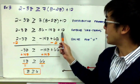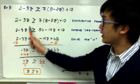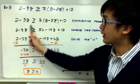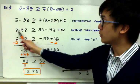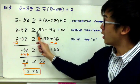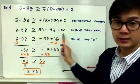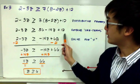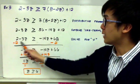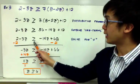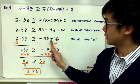The next step is to combine like terms. On the left-hand side there are no like terms to combine, so it stays as 2 minus 3z. On the right-hand side, you can combine 56 and 12, giving you 68. So now you have 2 minus 3z greater than or equal to negative 14z plus 68.